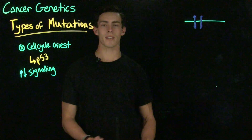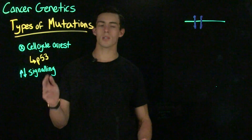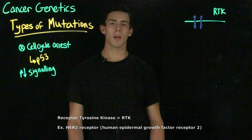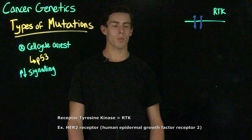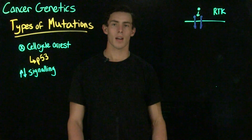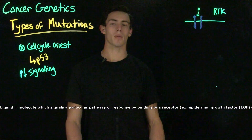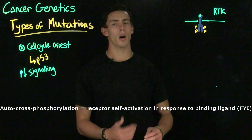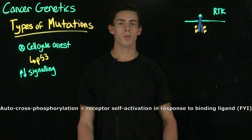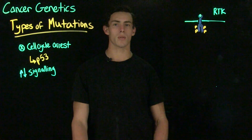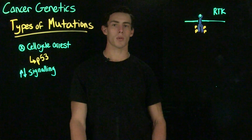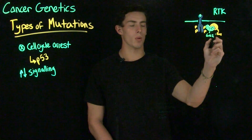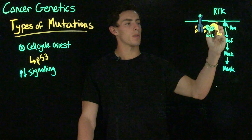Another important consideration in cancer genetics is how increases or decreases in cell signaling can affect pathways that cause cancer. A good example is the MAP kinase pathway with receptor tyrosine kinase signaling. A ligand will bind and two monomeric receptors will dimerize; this dimerized receptor with a ligand bound will auto-cross-phosphorylate at tyrosine residues. This will then bind to a protein called GRB2, shown in green, which will in turn activate a protein called SOS, shown in orange.